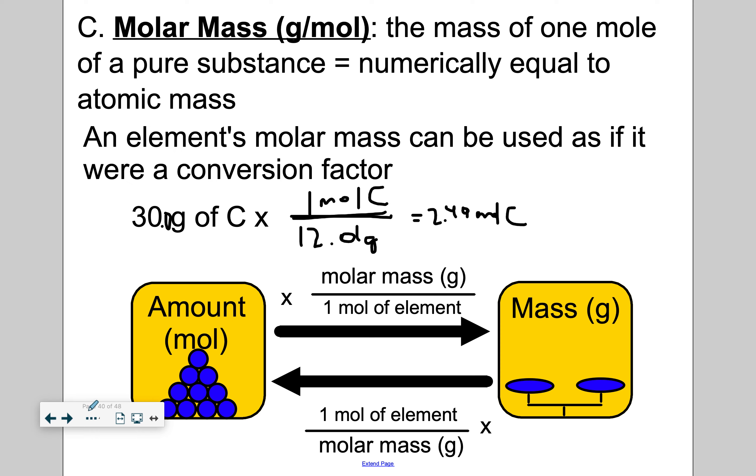What if I had five moles of carbon and I wanted to go to mass? So I set it up. I put one mole of your element on the bottom, and then you put the molar mass of carbon. Looking at the periodic table, the molar mass of carbon is 12.01. So then I would just go 12.01 times 5, and I get 60.05. So my answer would just be 60.05 grams of carbon.